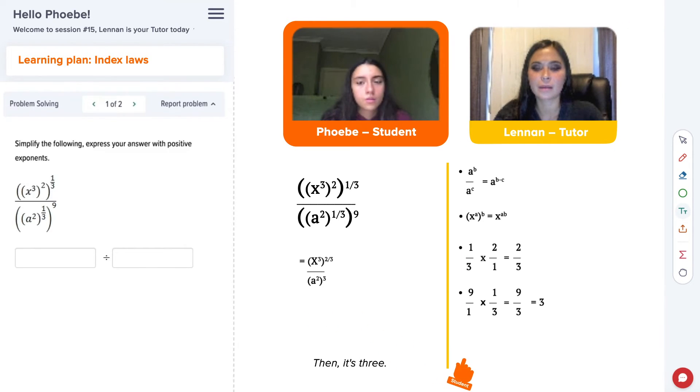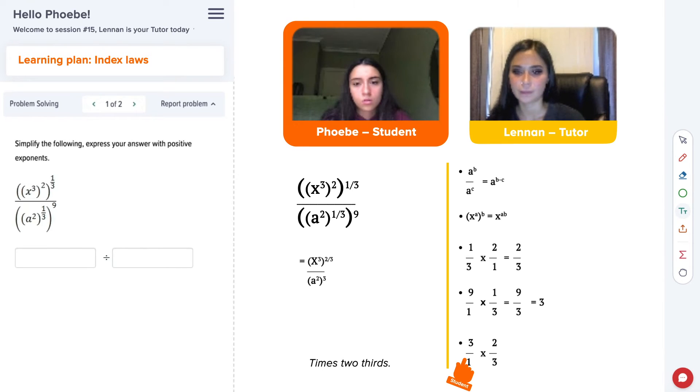Then it's three. Three times two thirds. Three. Yeah. Two. Thirds. Three. Which equals three times two. Six. Three. Which is two. Good.